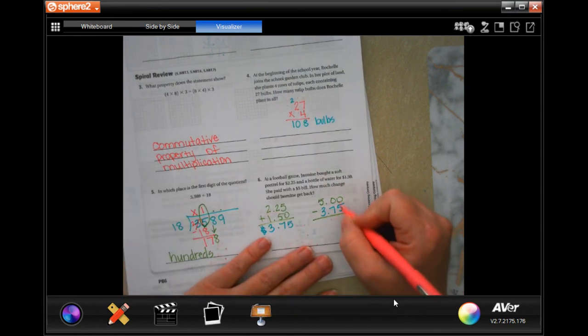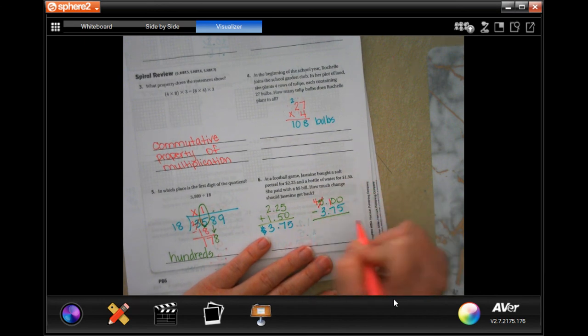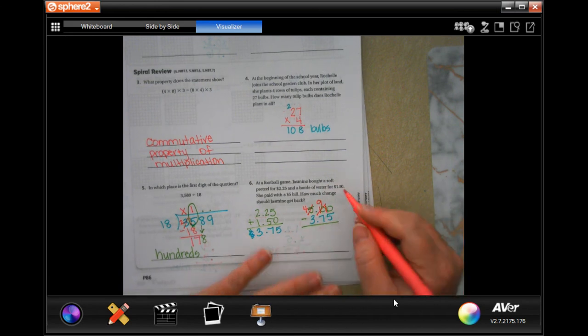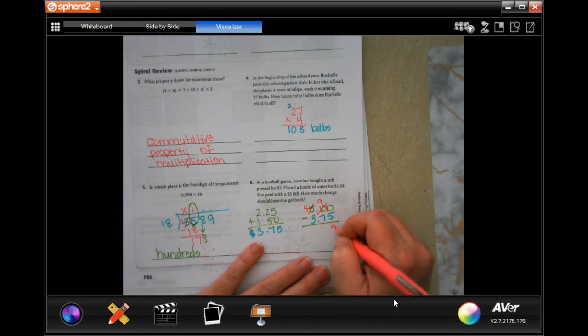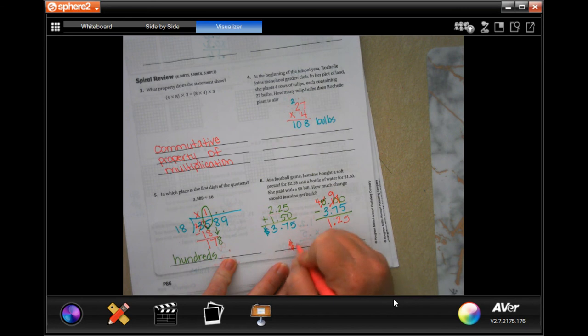Now, zeros cannot take away 5 or 7. So, I'm going to go all the way over here and make it a 4. I'm going to make that a 10. Now, I still need to borrow one for right here. So, I'm going to cross out the 10 and make it a 9. And, then this one becomes a 10. So, now 10 minus 5 is 5. 9 minus 7 is 2. And, 4 minus 3 is 1. Dropping my decimal straight down. That gives me $1.25.